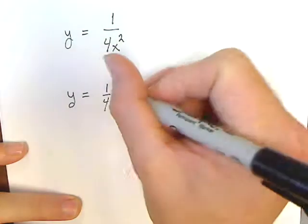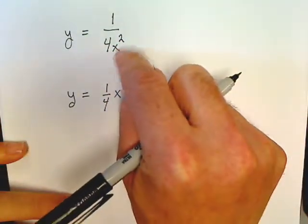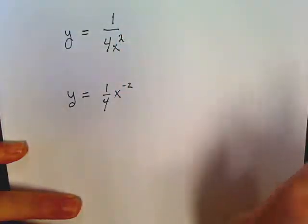Just rewrite this as (1/4)x to the negative 2. Since this is x squared on the bottom, it would be x to the negative 2 on top.